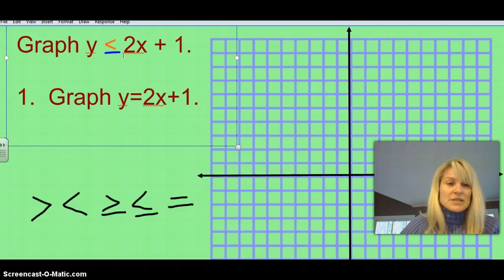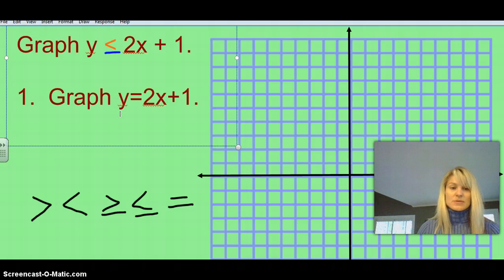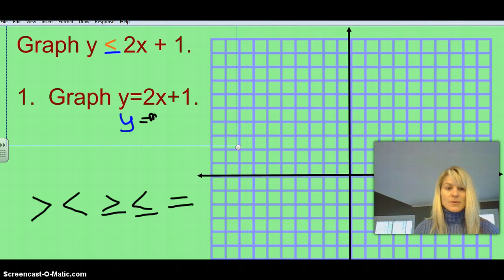So we're going to look at this first example here. It's y is less than or equal to 2x plus 1. So when we first start graphing it, we pretend that that inequality isn't there, and we just graph it like we have been graphing items. We look at this, and that's my y, and then we have our equals, and then we have our mx plus b.